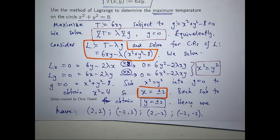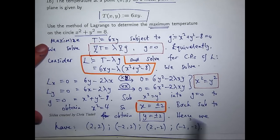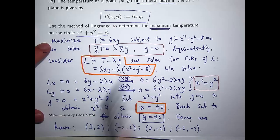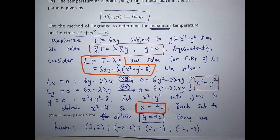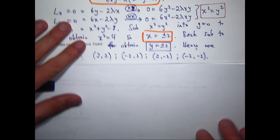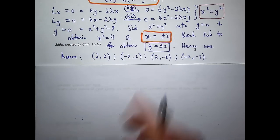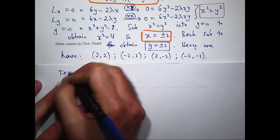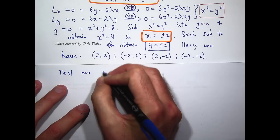All we need to do is take those four points and test the temperature at each of those points. These are our points of interest. Let's test the temperature at each point, then pluck out the largest value or values and then disregard the rest because we're only interested in the maximum temperature. The idea now is to test our points of interest.